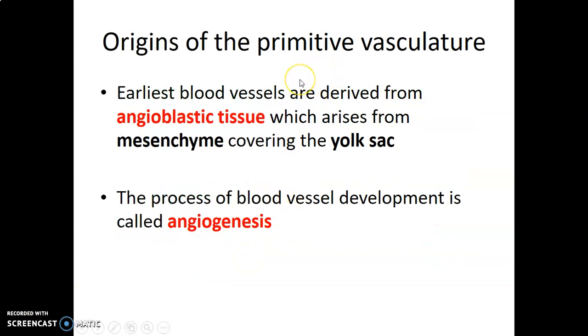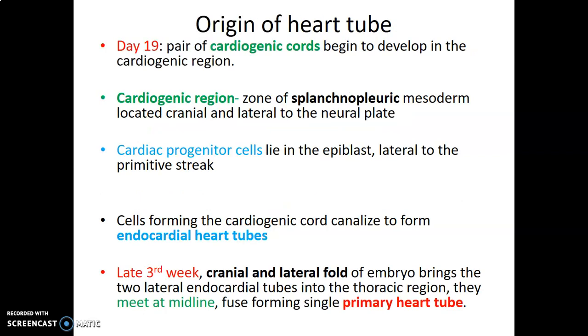Where does this primitive vasculature come from? We have what is called angioblastic tissue that comes from the mesenchyme around the yolk sac. The process of forming blood vessels is what we refer to as angiogenesis.